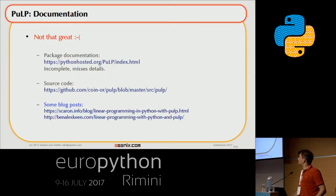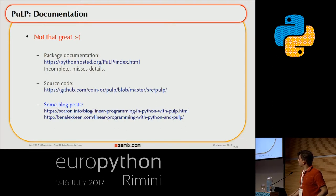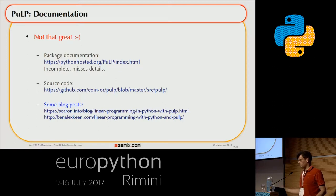Regarding the documentation — when I started using PULP, the first thing I did was look up the documentation. I found it's a bit lacking — it's incomplete, doesn't actually document everything, and misses some details. There are some tricky things in PULP that you have to know, which probably come from the OR space, and if you're not really into OR, it doesn't feel as Pythonic. The best thing you can do is look at the source code, which is really easy to read, and there are a few blog posts that are helpful as well.